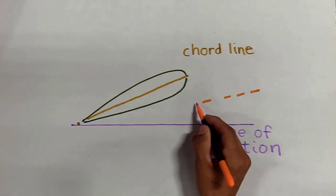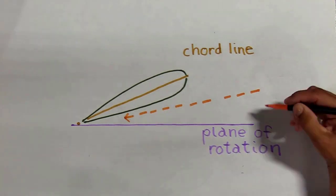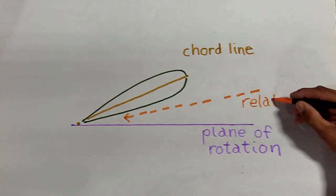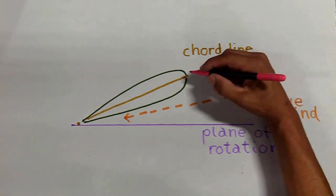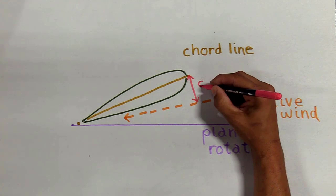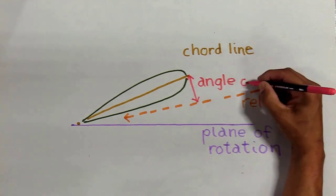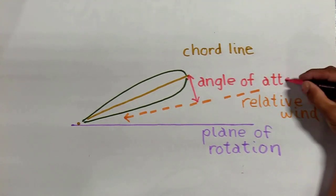So we have what we call the relative wind. This is the actual angle that the air is striking the rotor blade. Now between the relative wind and the chord line, this is your angle of attack. This is where we get our lift from.